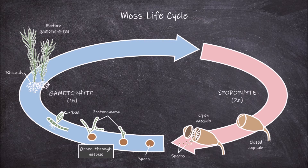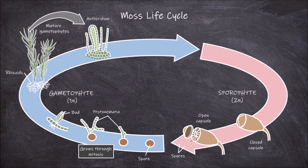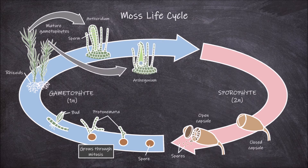Although each gametophyte can produce both female and male sex organs, they tend to only produce one kind to avoid self-fertilization. The male gametophytes have male sex organs called antheridia, or singular antheridium, which contain the male gametes — the sperm. The female gametophytes have female sex organs called archegonia, or singular archegonium, which contain the female gametes — the eggs.